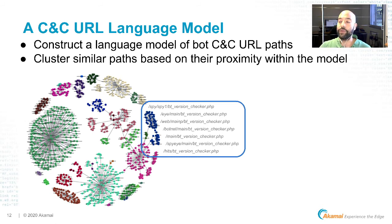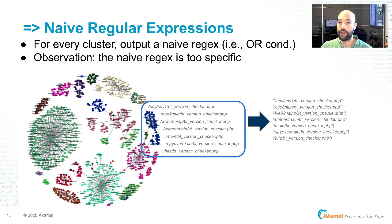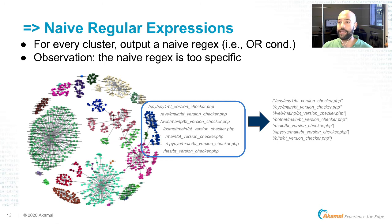The second step is clustering the points within the language model corresponding to URL paths. We then have clusters of points corresponding to URL paths known to be related to command and controls. We take every cluster and transform it into a naive regular expression, which is just a set of OR conditions between all of the URL paths within that cluster — essentially saying it is either exactly the first URL path, or exactly the second, or exactly the third, and so on.